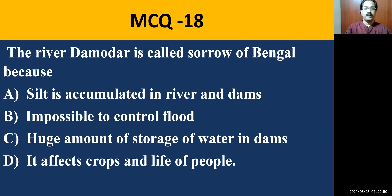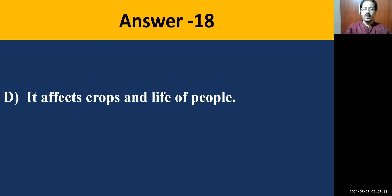MCQ question number eighteen: River Damodar is called the Sorrow of Bengal because — silt is accumulated in the river and dams; impossible to control flood; huge amount of water storage in dams; or it affects crops and life of people. The most correct answer is that it affects crops and life of people.